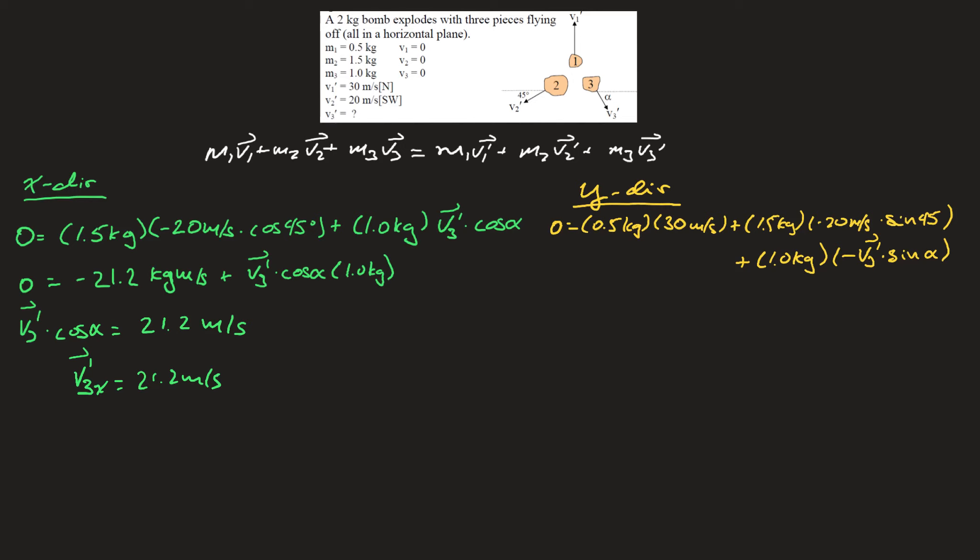I can simplify a little bit here. You're going to end up with 0 equals negative 6.21, so that's the first plus the second momentum, kilograms meters per second.